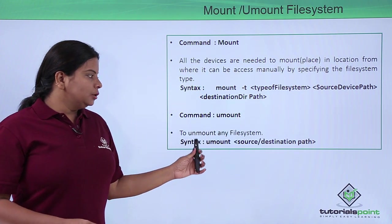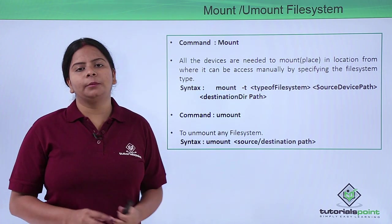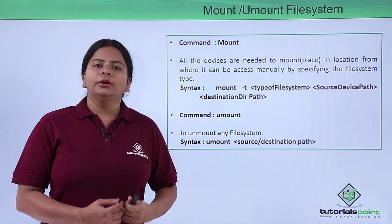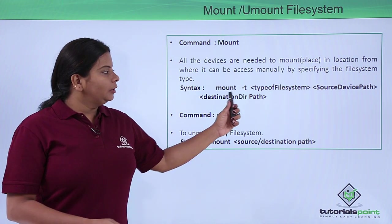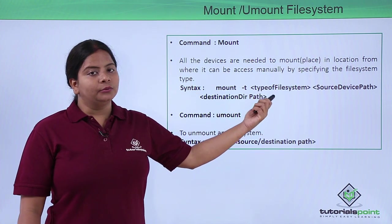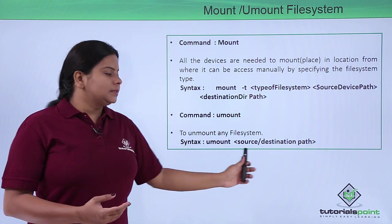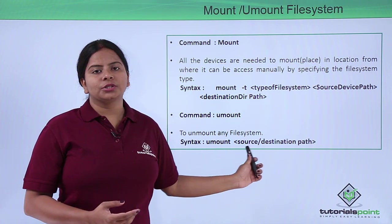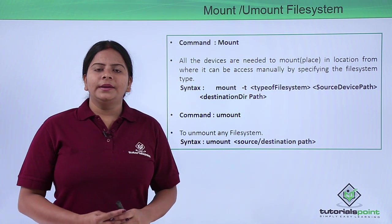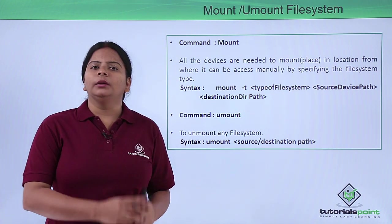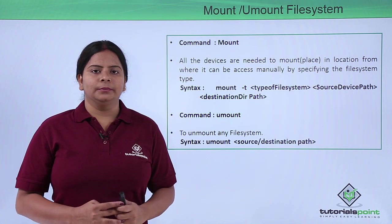We can also use umount for unmounting any kind of file system. There is no special umount command for a specific file system — whether it is NFS, ext3, a device, or any removable device, the umount command is the same. You can use either umount with the source or the destination. Let us check in the terminal how to create partitions, how to mount and umount, and the different types of file systems available in Linux.